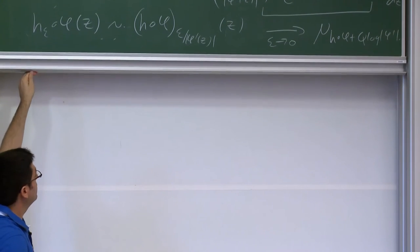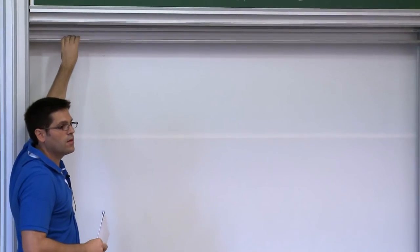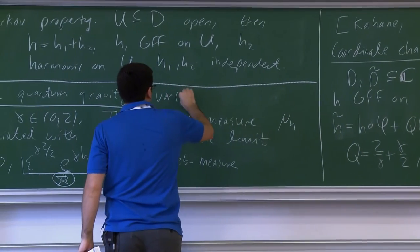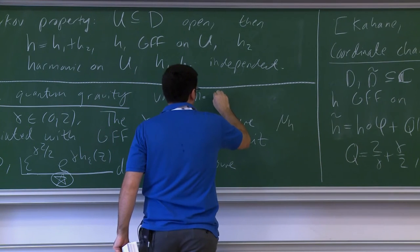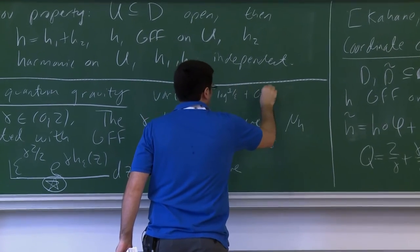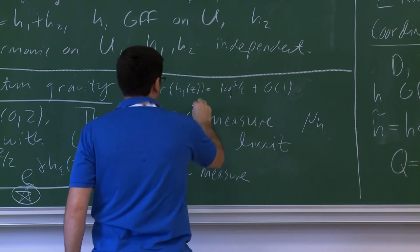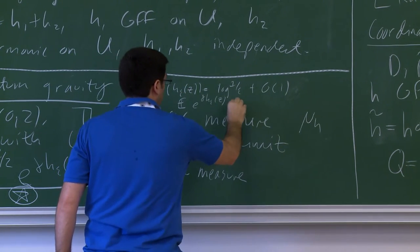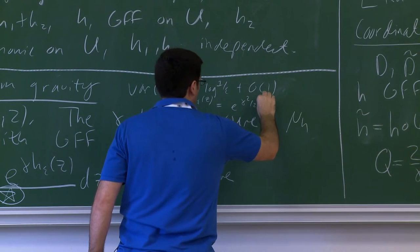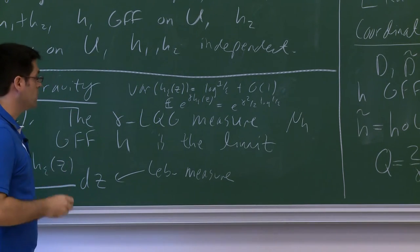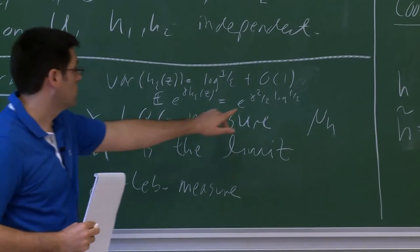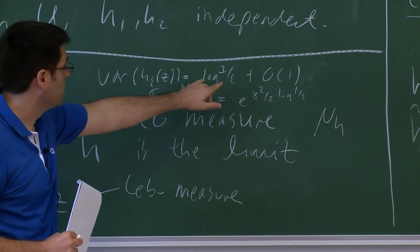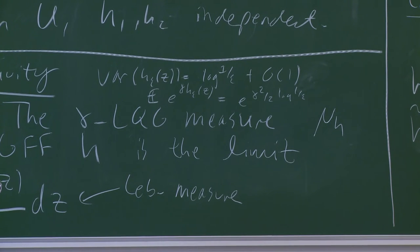The normalization factor ε^{γ²/2} comes from the variance of H_ε(z), which equals log(1/ε) plus a bounded term. Since e^{γH_ε(z)} is a Gaussian with this variance, its expectation is e^{γ²/2 · log(1/ε)}, so ε^{γ²/2} is the correct normalization to remove this divergence. The reason you see a log is that the covariance function for the GFF is the log function.